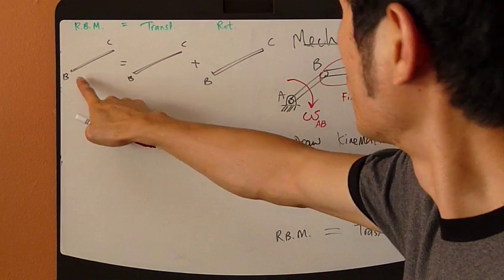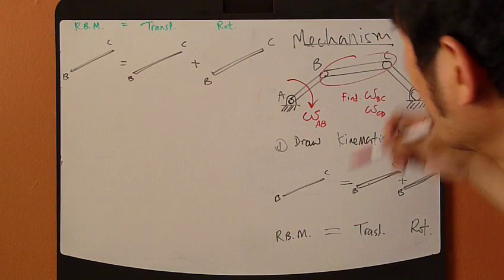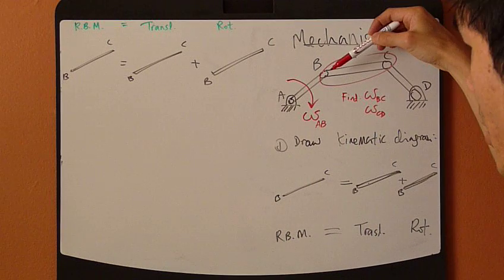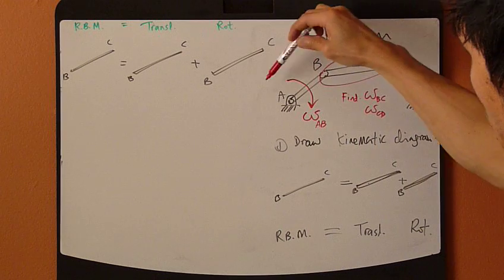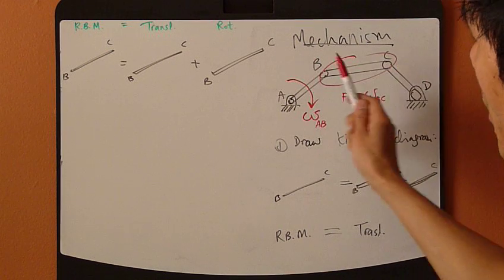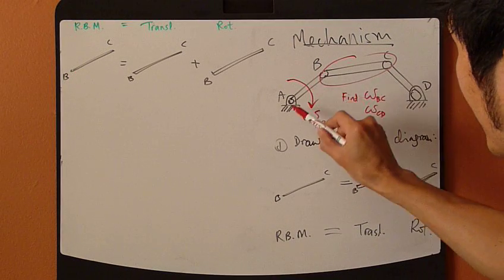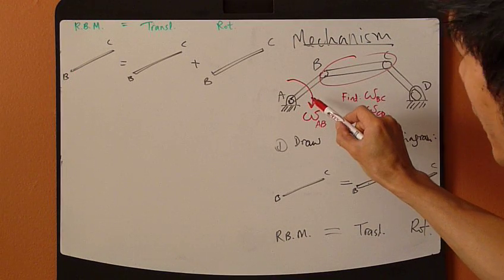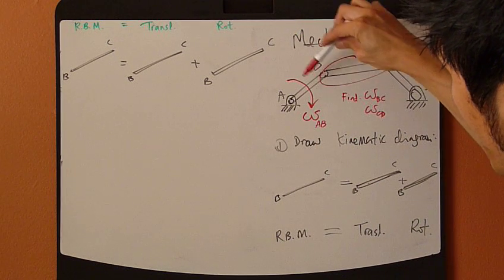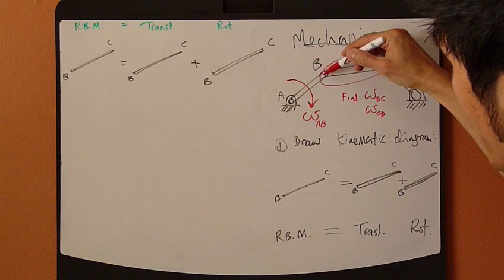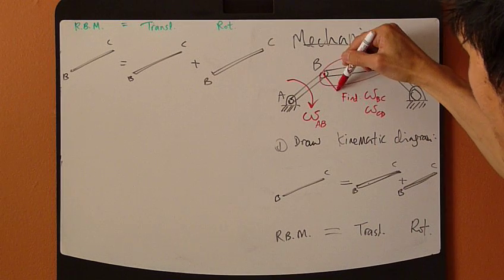For point B, you actually know the velocity vector direction because you know how AB is rotating clockwise. Point B is also attached to link AB, so knowing this angular velocity of AB, you know the velocity of B right away, which goes down this way.